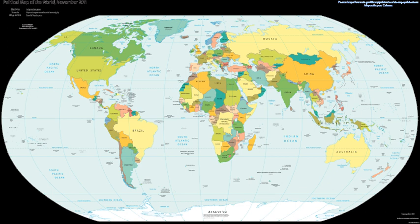The Kingdom of the Netherlands, a sovereign state, comprises four separate countries — Netherlands, Aruba, Curaçao, and St. Martin.